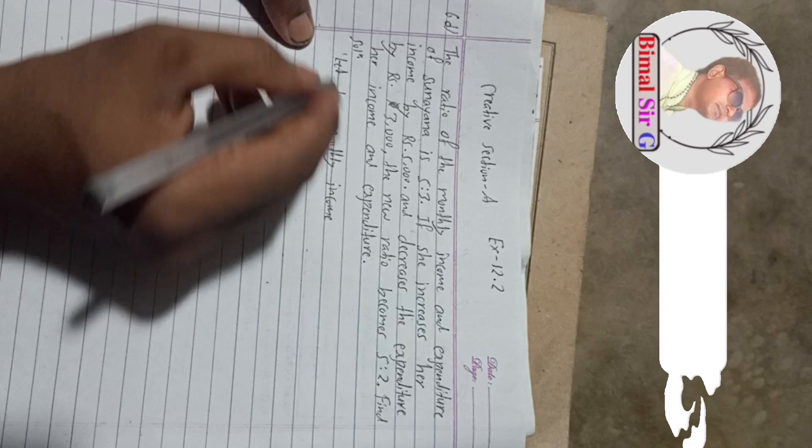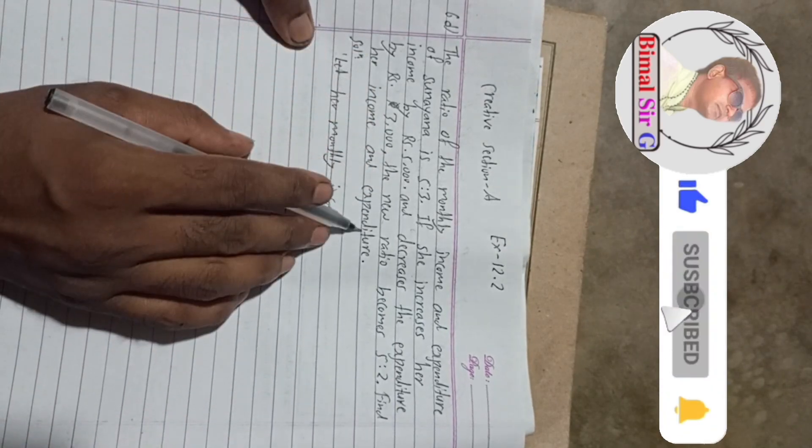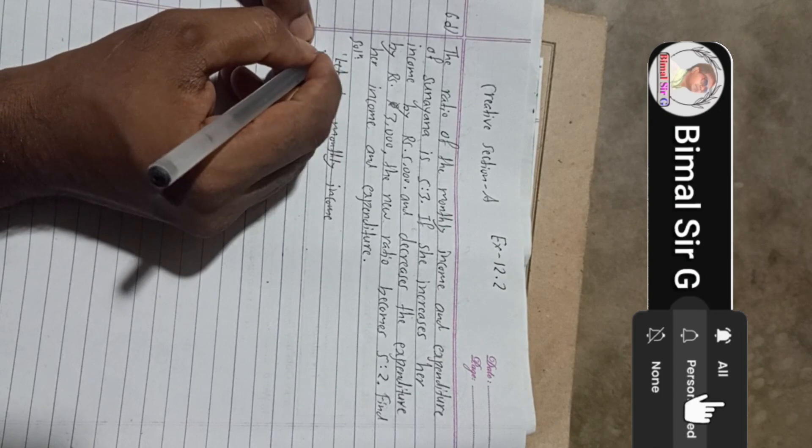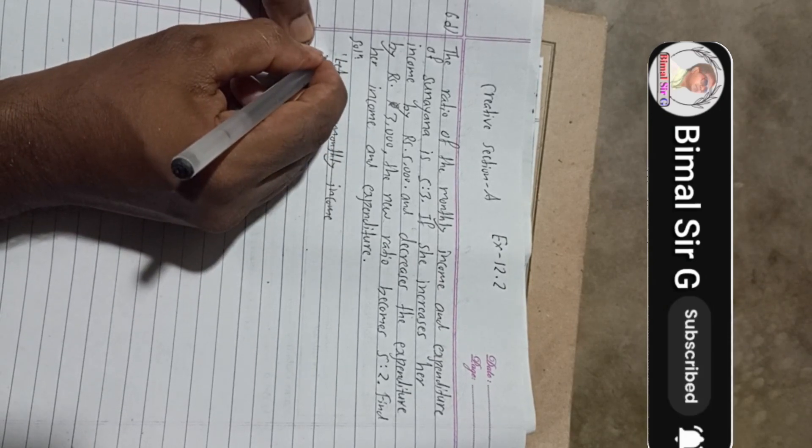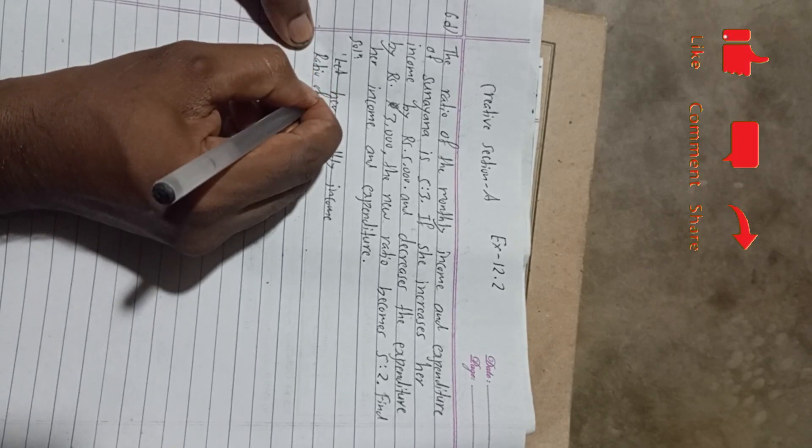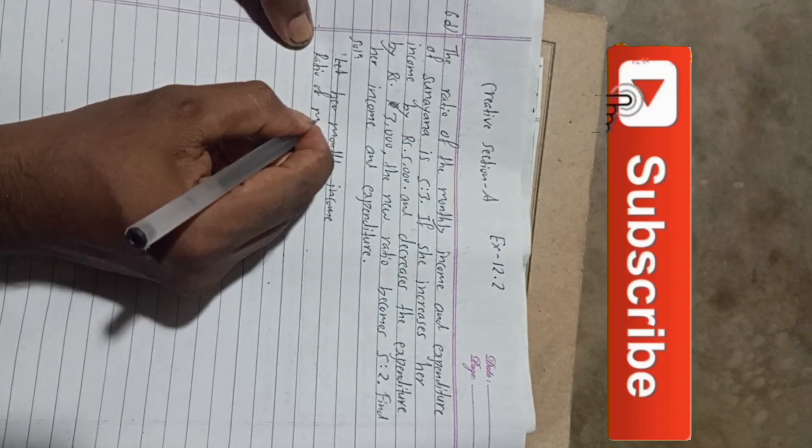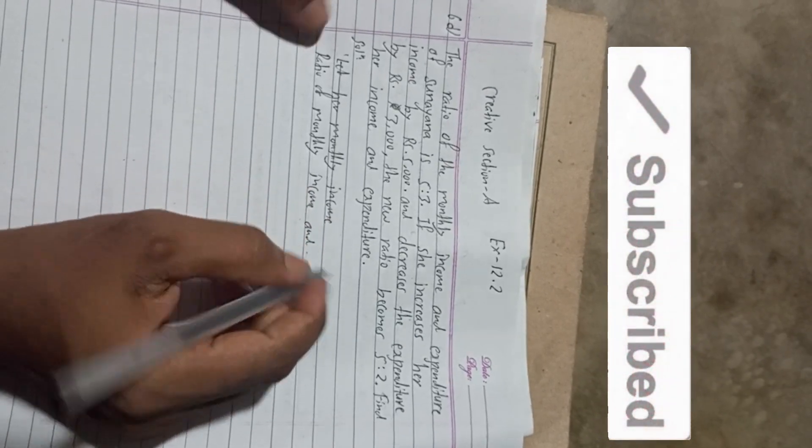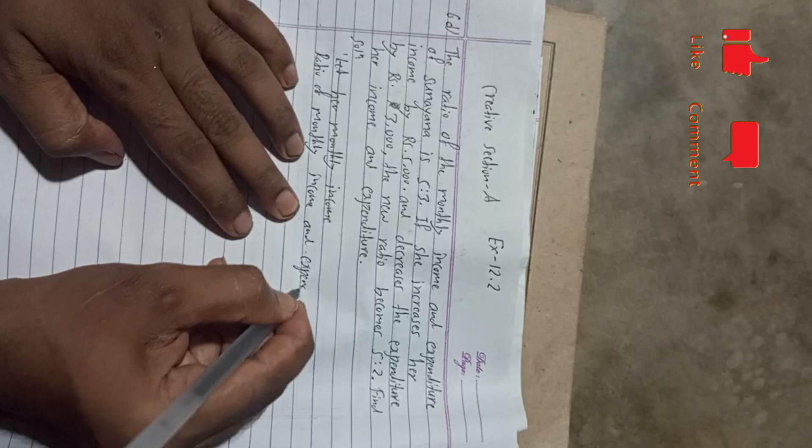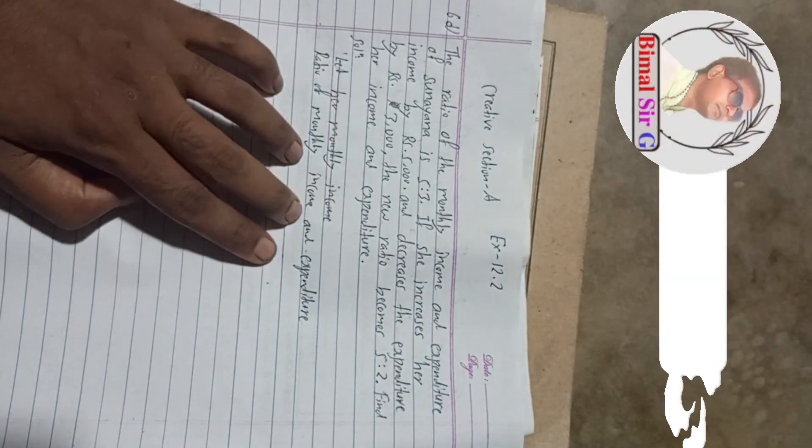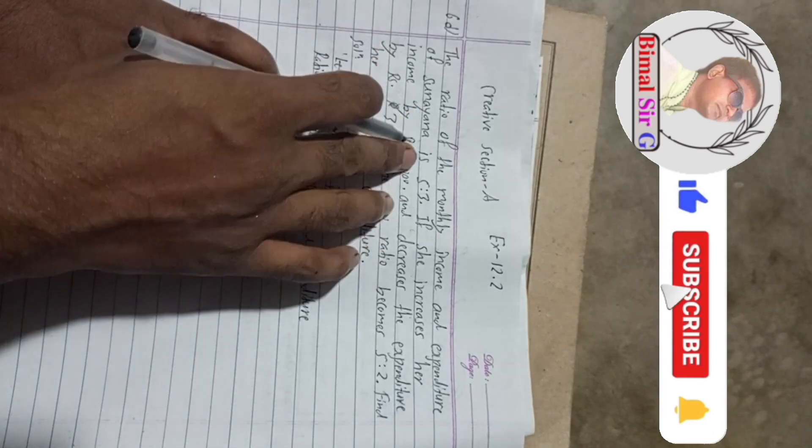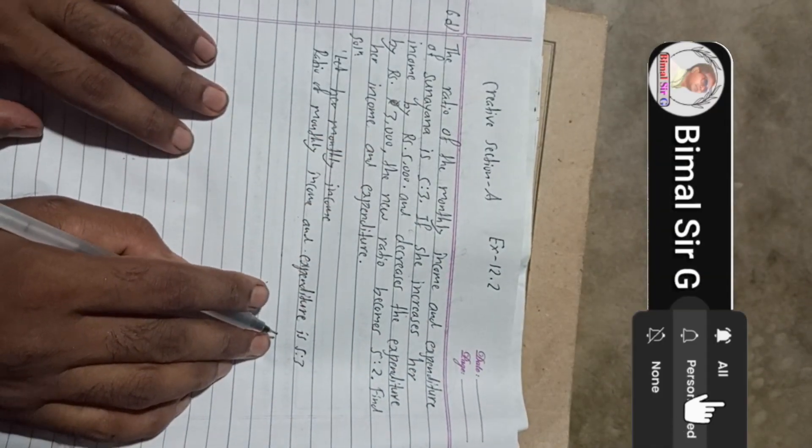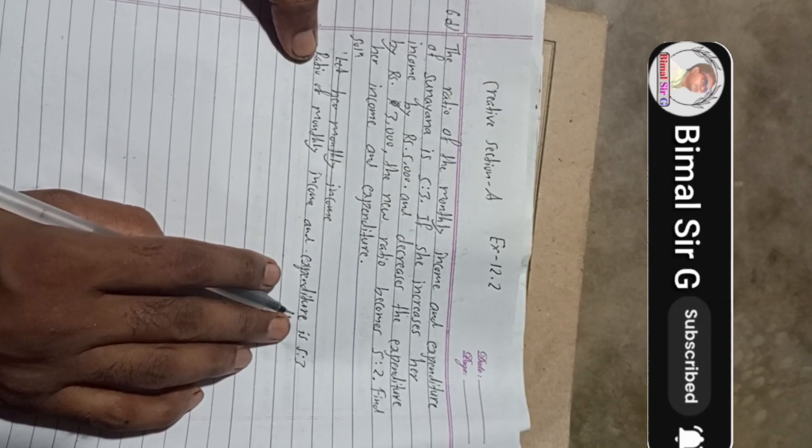So now here, we will start the solution. We have to find her income and expenditure. But here is given the ratio of monthly income and expenditure. So now we will suppose, here is given ratio of monthly income. Now from this, we can write, we will suppose.